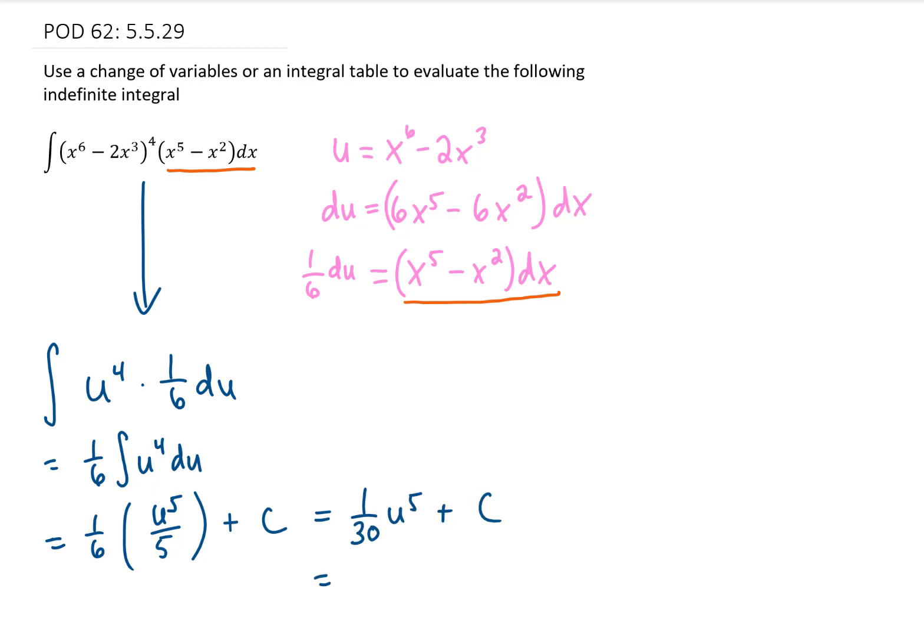And now we need to back-substitute what we chose as our u value earlier. We have u to the fifth, which should be x to the sixth minus 2x cubed, all of that to the fifth power. Keep that plus c on there, and that is going to be your final answer to this problem.